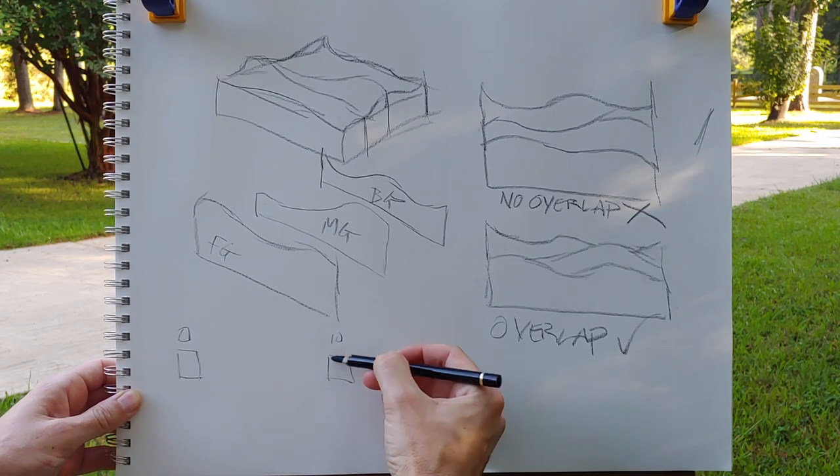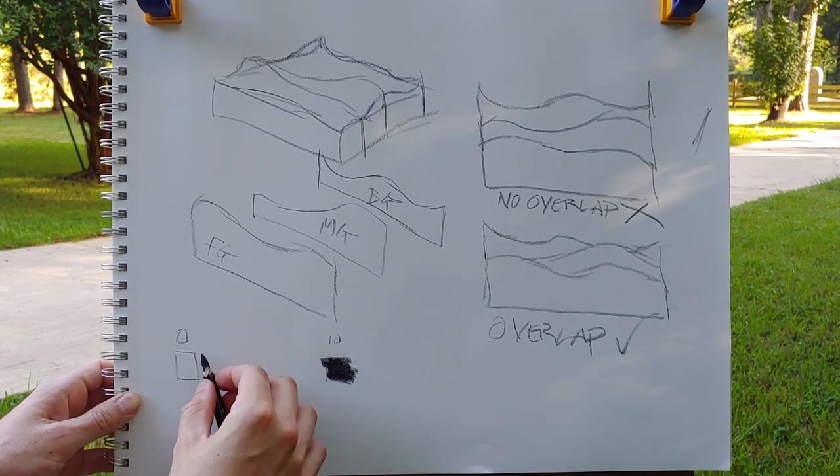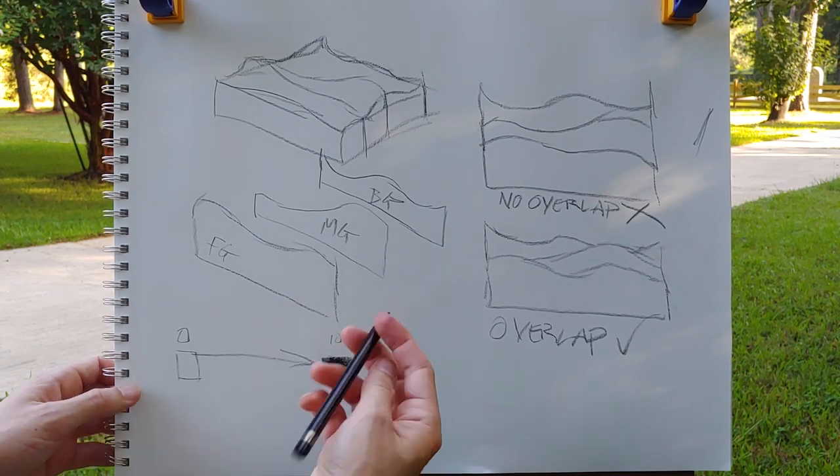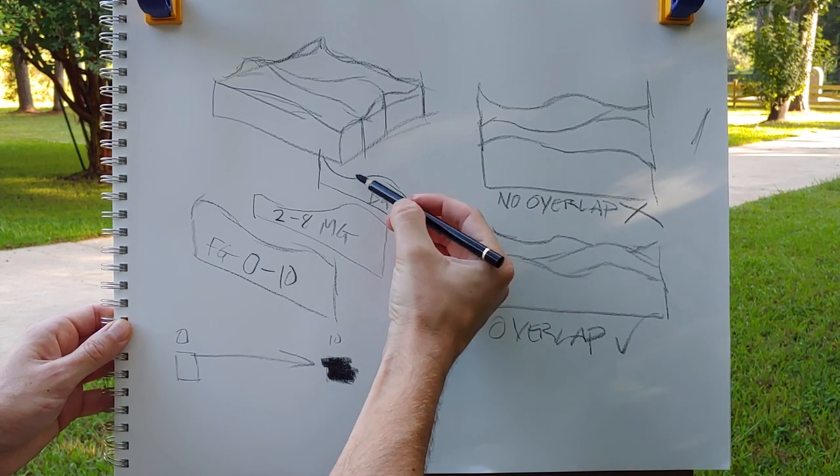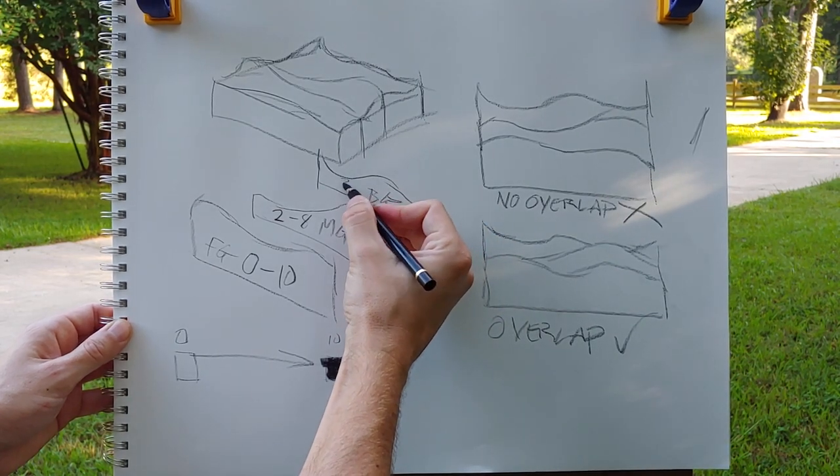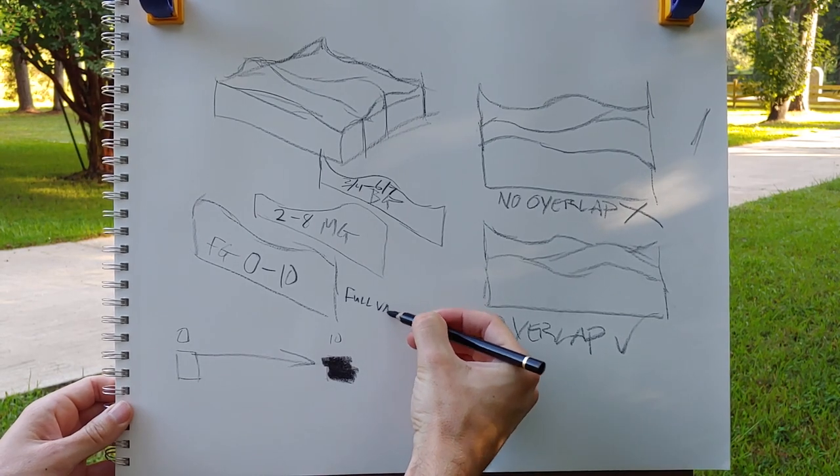Now, if we combine that with a value scale, where we go 0 to 10, 0 being the absolute white of the paper and 10 being as dark as your material can go. What we do is associate a value range with the foreground, middle ground, and background. Basically, in the foreground, you use your full value range.